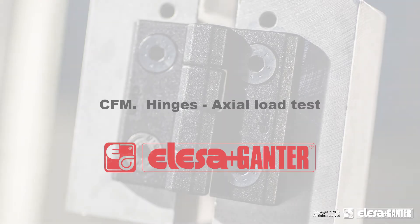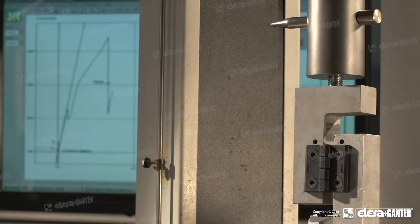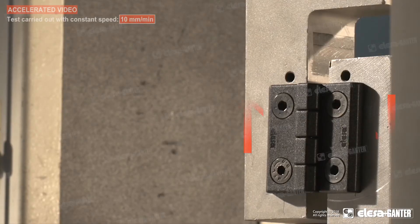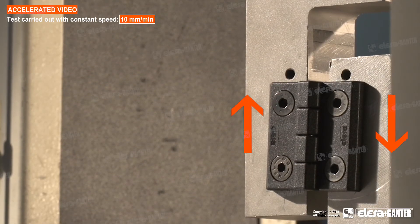CFM hinges are made in super technopolymer, therefore they do not show significant deformation even under loads very close to the load at breakage.